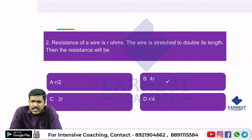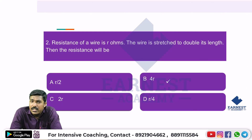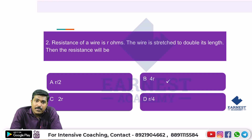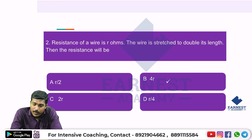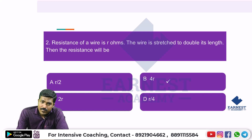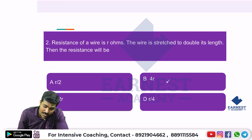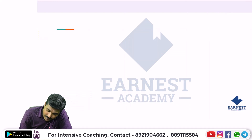Next question on screen: The resistance of a wire is R ohms. The wire is stretched to double its length. What is the new resistance? The answer is 4R.